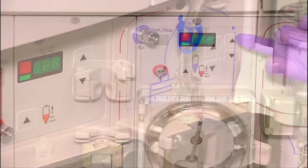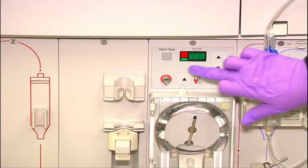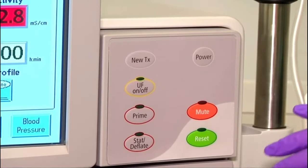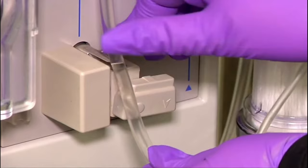The dialysate delivery system also monitors the filtration rate, either indirectly by controlling the TMP, pressure-controlled ultrafiltration, or directly by controlling the actual filtration, volume-controlled ultrafiltration.